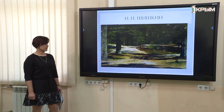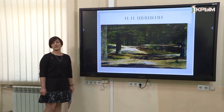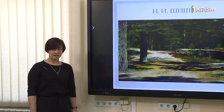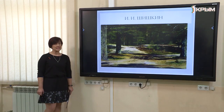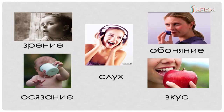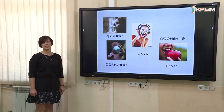Ничего не мешает — тишина и покой. Благодаря чему мы получаем информацию о конкретных предметах на этой картине? Правильно — благодаря органам зрения. Если бы мы оказались в лесу, мы бы услышали звуки. Ребята, какими органами чувств обладает человек? Правильно: кроме зрения и слуха есть обоняние, осязание, вкус, и ещё такой орган как орган равновесия. Мы воспринимаем окружающий мир благодаря органам чувств.